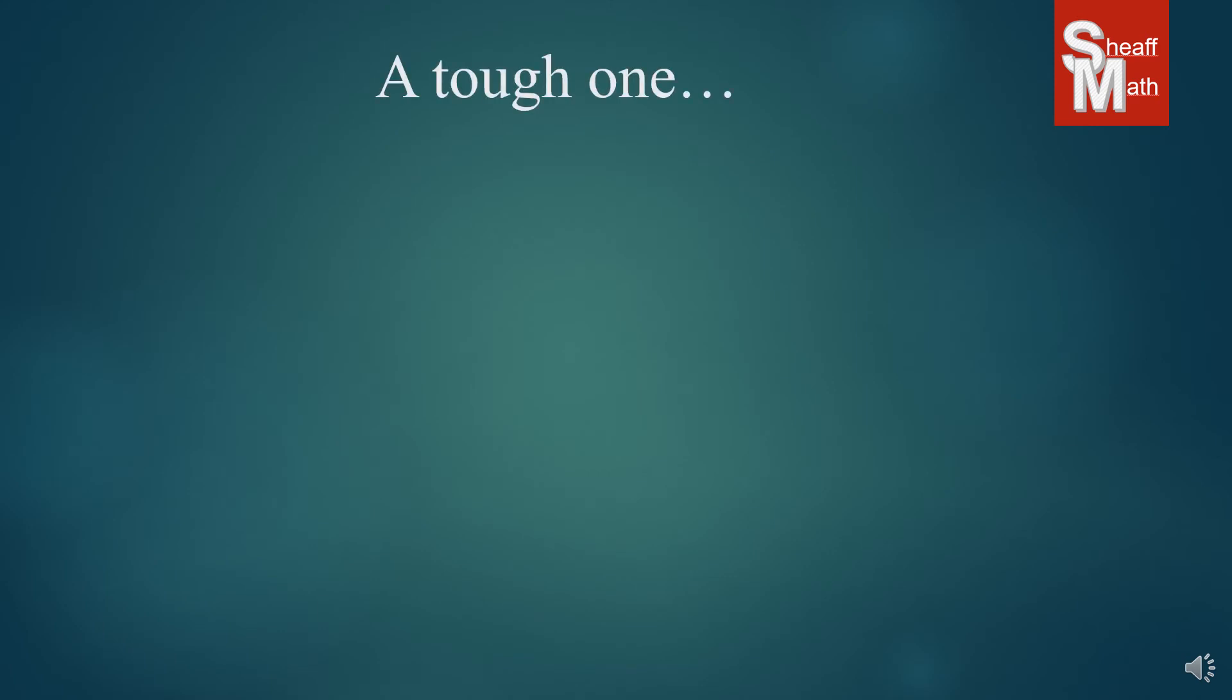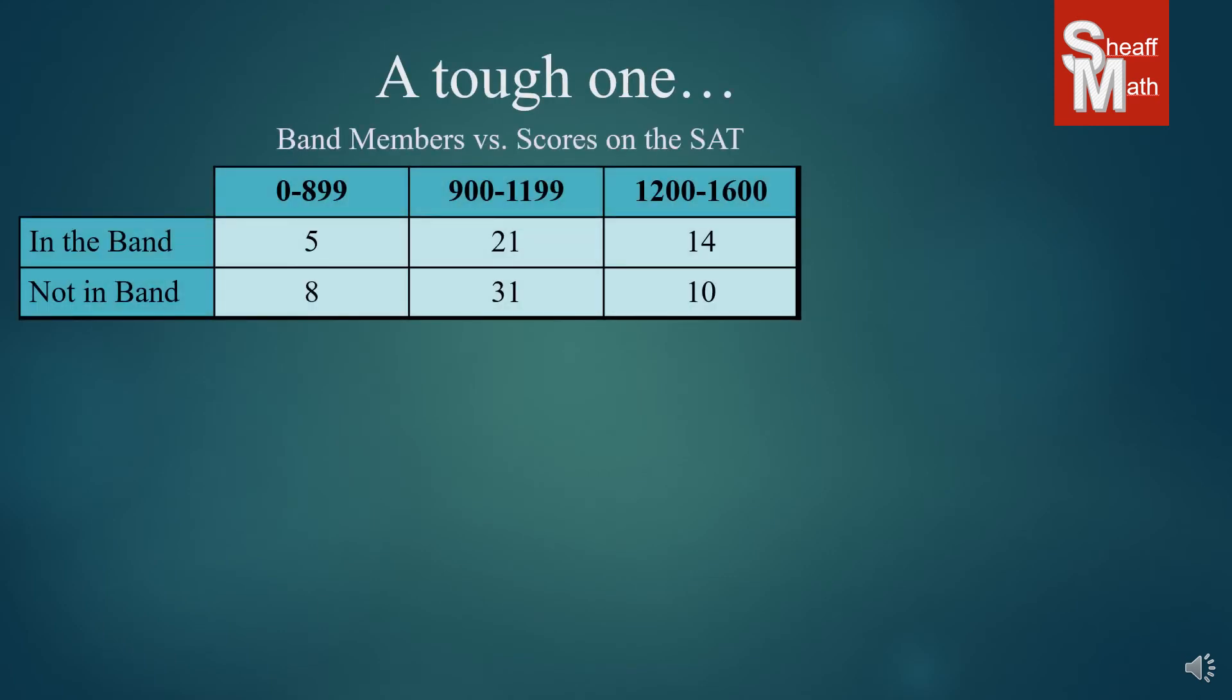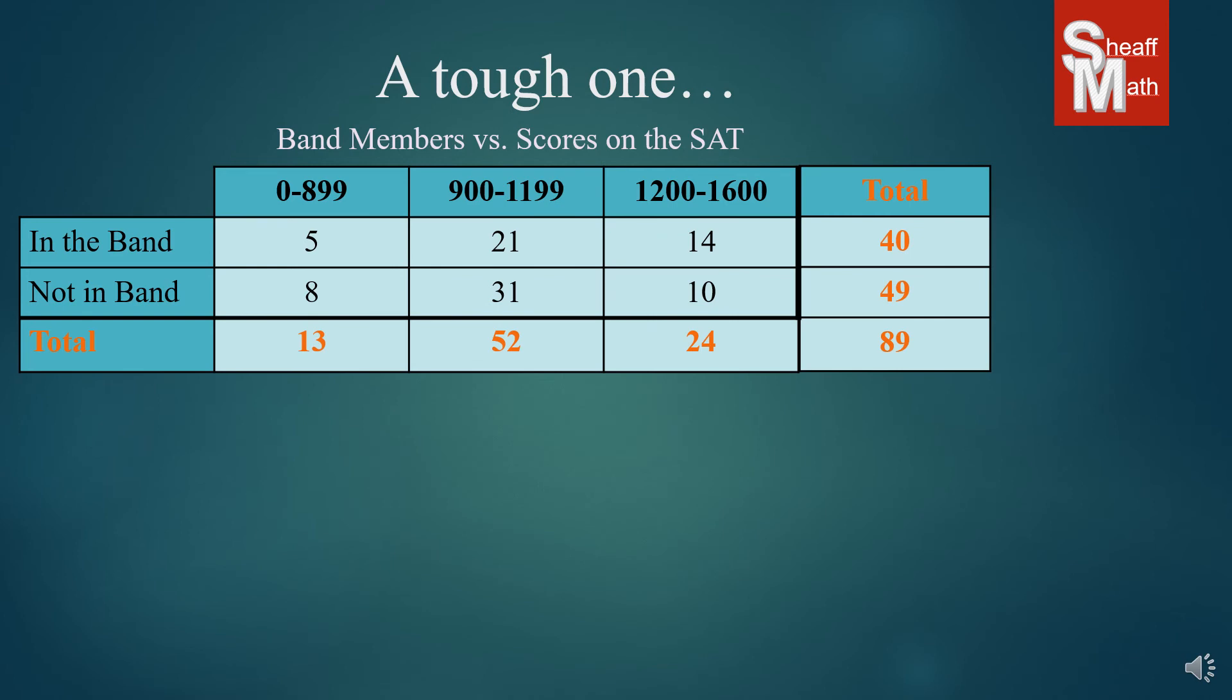Okay, now I'm going to give you a tough one. Now this is a new type of frequency because we have two items on the left, we're comparing those that are in the band and those that are not in the band compared to their SAT scores, and we have three different columns for that: 0 to 899, 900 to 1199, and 1200 to 1600. And so like we always do, we put our totals there.